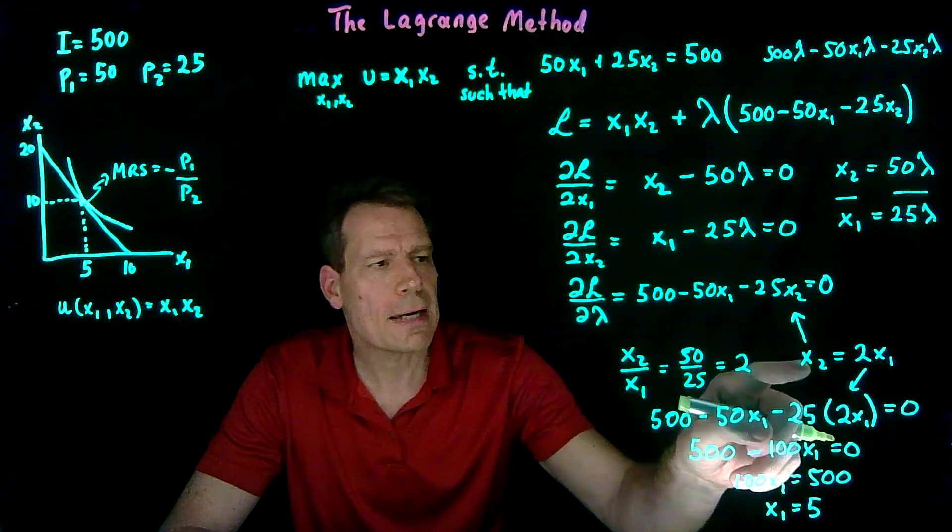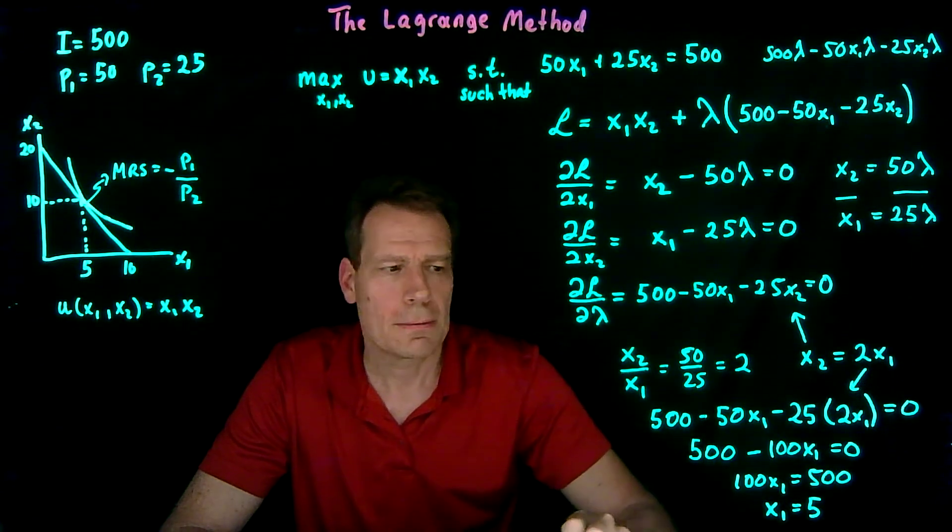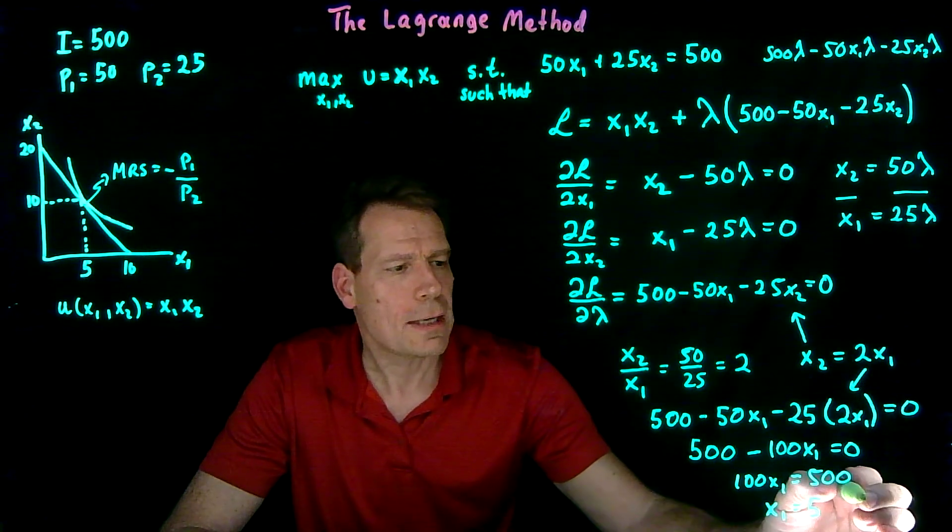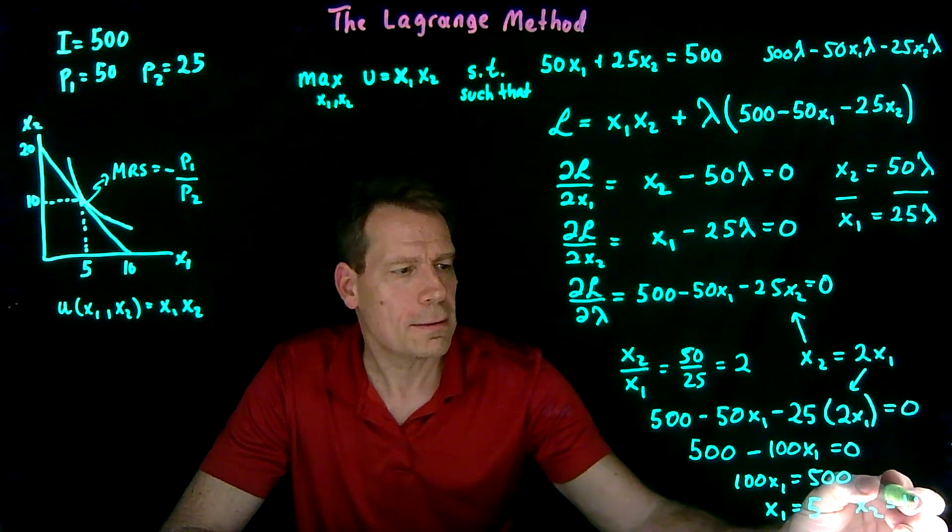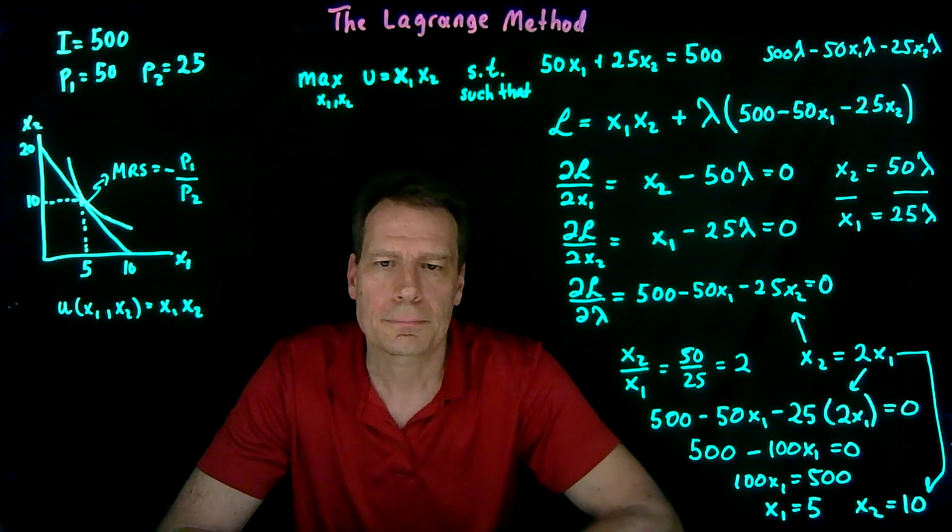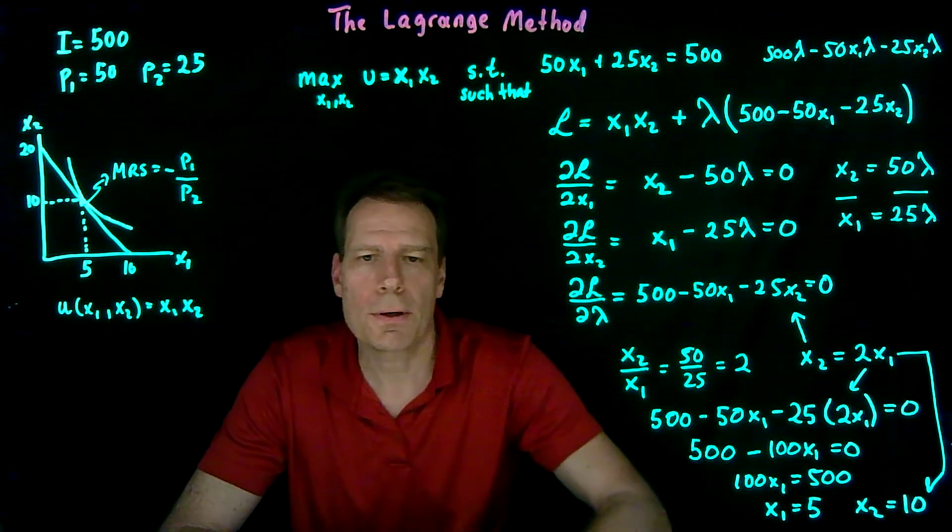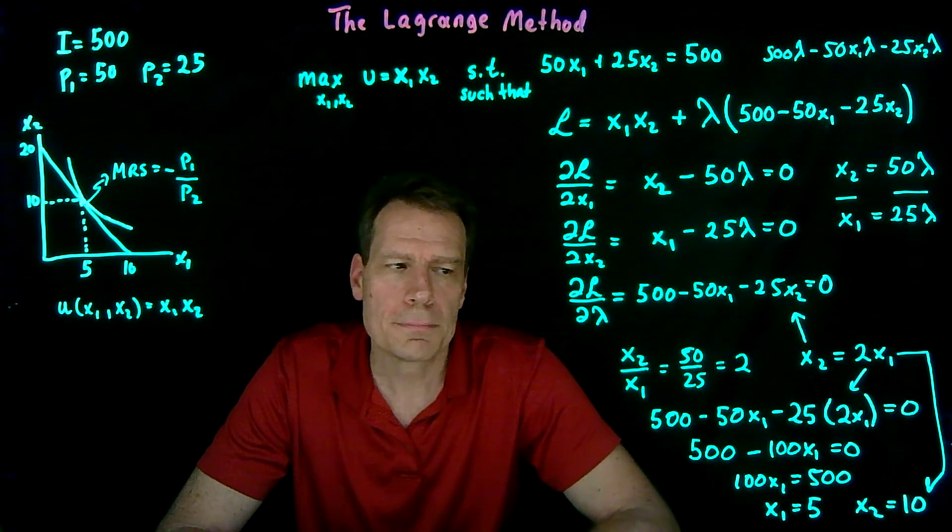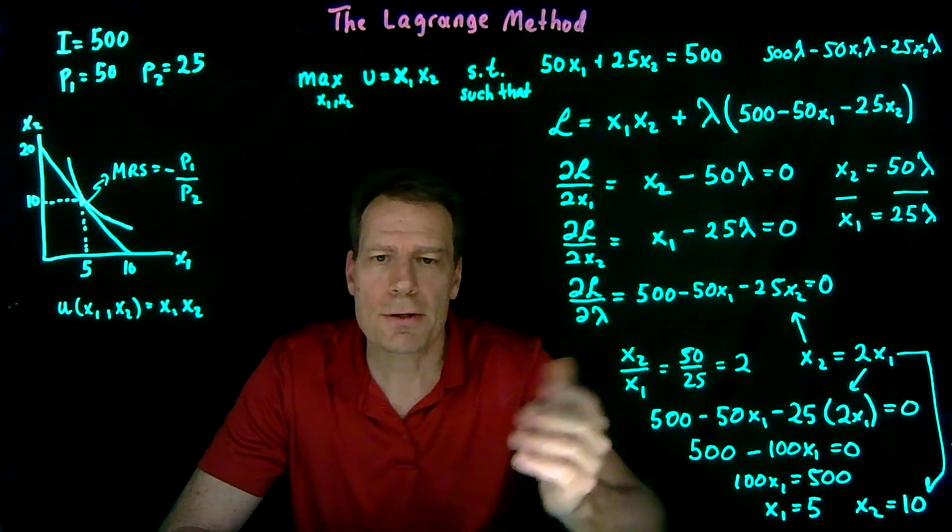And since we know that x2 is twice of x1, we can now know that x2 is equal to 10. We're just using this. And that's exactly what we also got previously. So that's how the Lagrange method works.